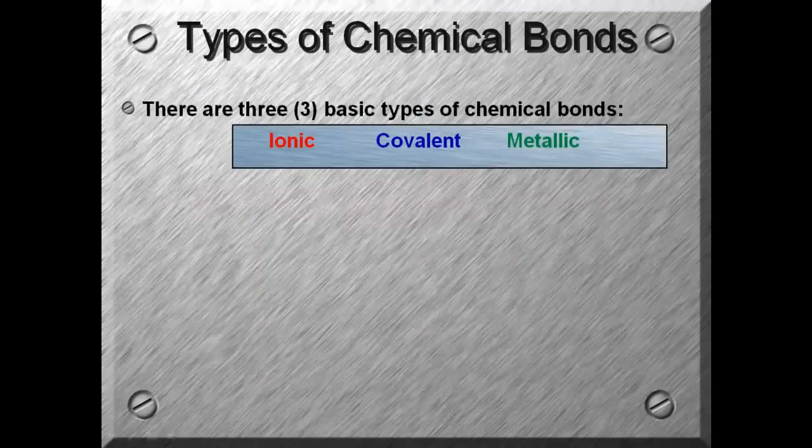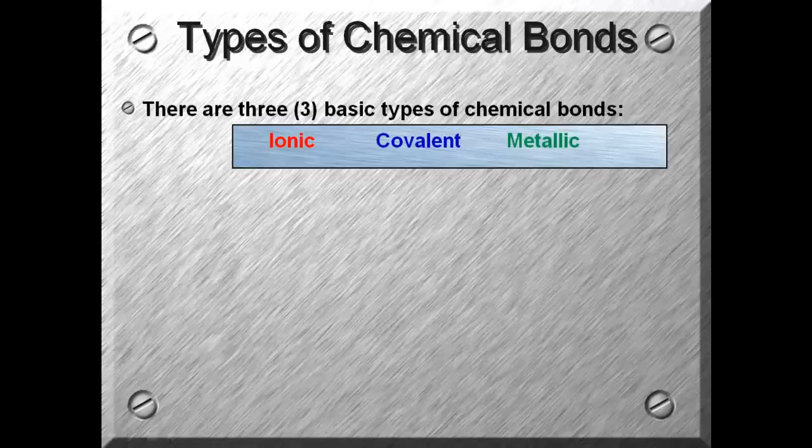There are three basic types of chemical bonds: ionic, covalent, and metallic.